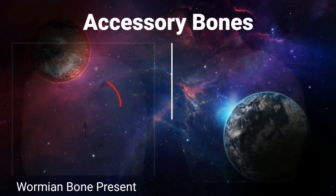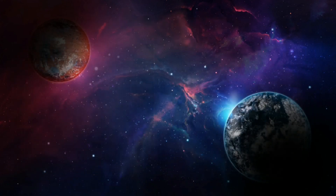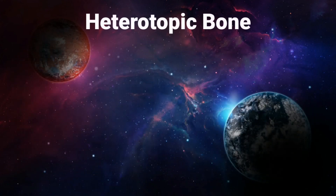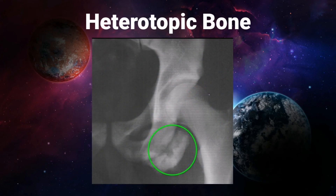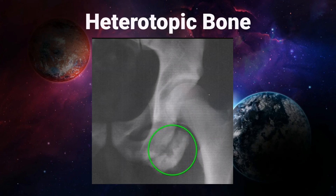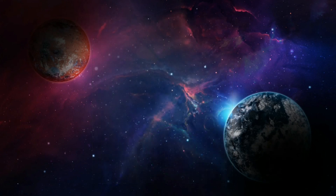An example of an accessory bone in the human skull is the Wormian bone, which is not always present in every individual. Heterotopic bones sometimes develop in soft tissues — for example, horse riders sometimes develop bones in the adductor muscles, which are called rider bones.